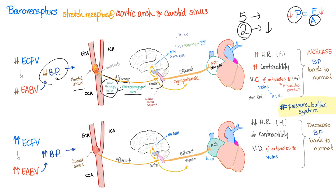The center is the medulla oblongata, specifically the nucleus tractus solitarius. Once the signal reaches the center, it goes to the hypothalamus. The hypothalamus senses less blood pressure and secretes ADH, trying to constrict blood vessels using the V1 receptor and retain water at the kidney using the V2 receptor and aquaporin-2 water channels. The nucleus in the hypothalamus is the supraoptic nucleus. Back to the medulla oblongata, an efferent sympathetic signal is sent.